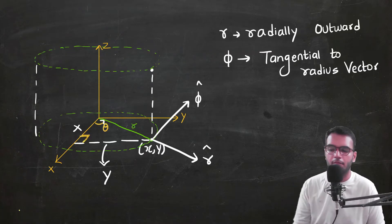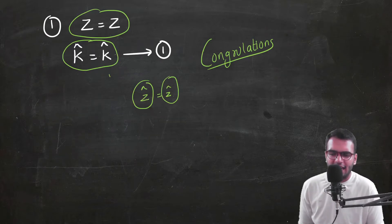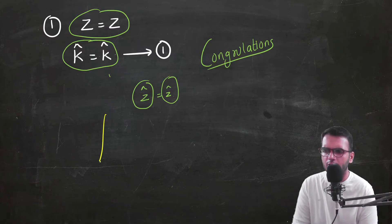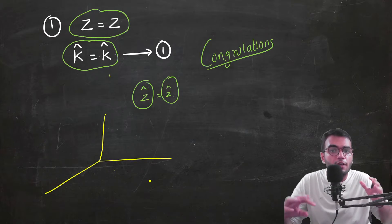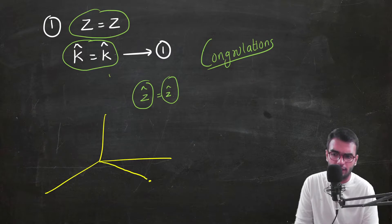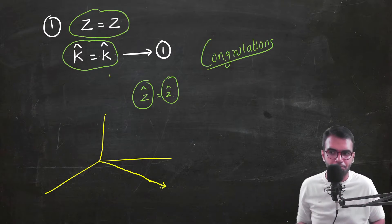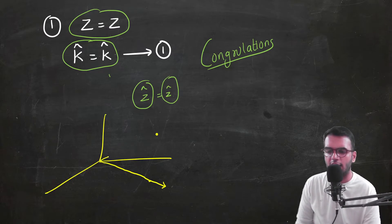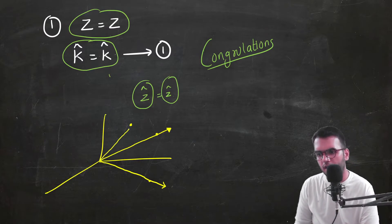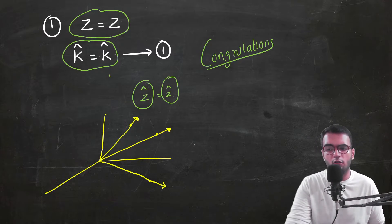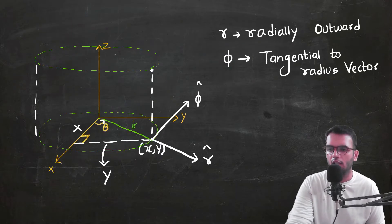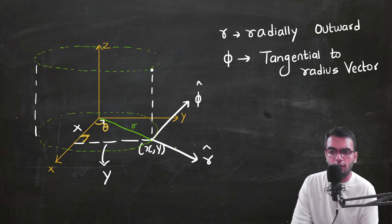For the second and third conversions, some mathematics is required. What is the direction of the radius vector r̂? The radius vector always points towards the point — it goes from the origin in the direction of the point. So the direction of r̂ is away from the origin, towards the point.